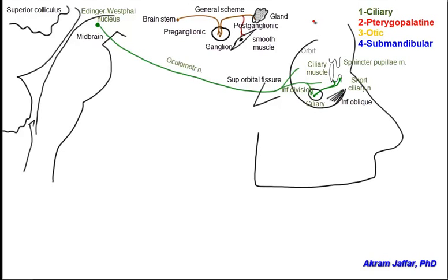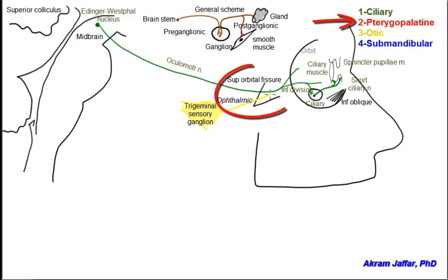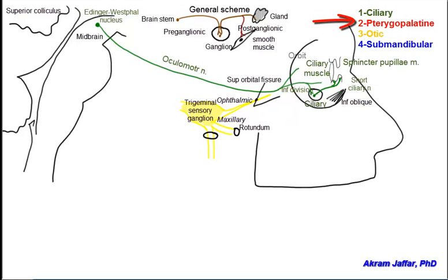The second ganglion is the pterygopalatine ganglion, the largest peripheral ganglion of the parasympathetic system. It hangs from the maxillary nerve in the pterygopalatine fossa. The trigeminal nerve gives rise to three divisions: the ophthalmic division that passes through the superior orbital fissure, the maxillary division through foramen rotundum, and the mandibular division through foramen ovale.